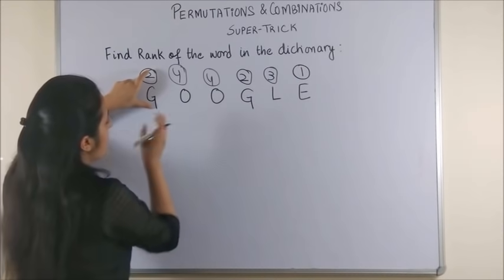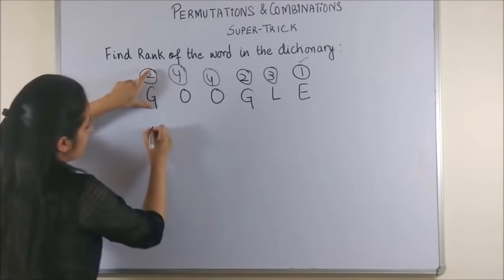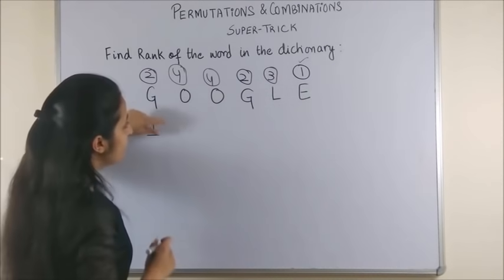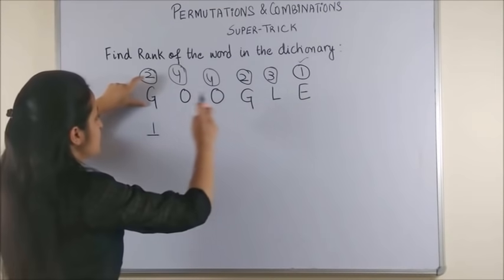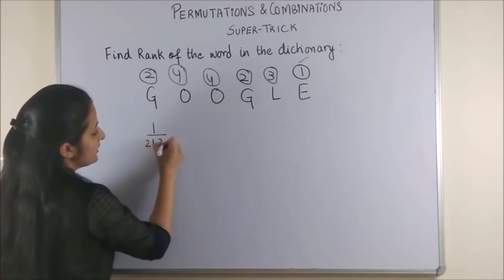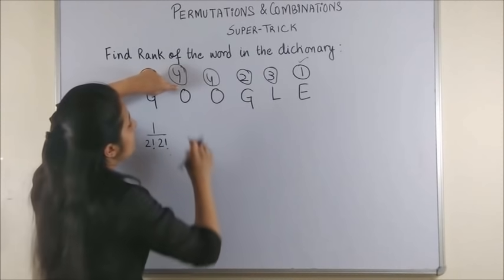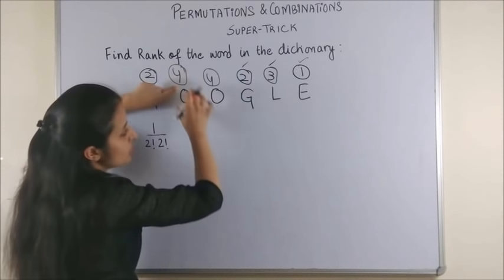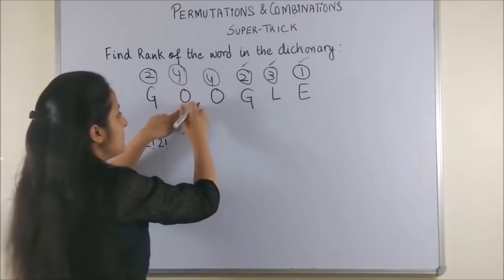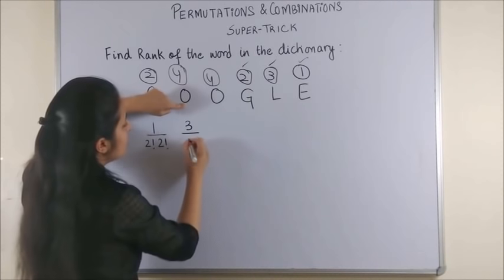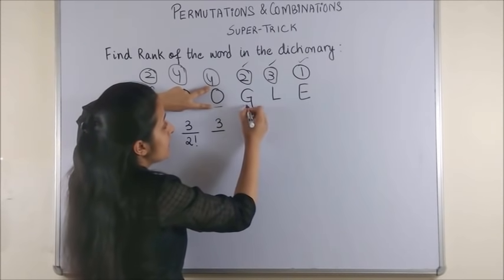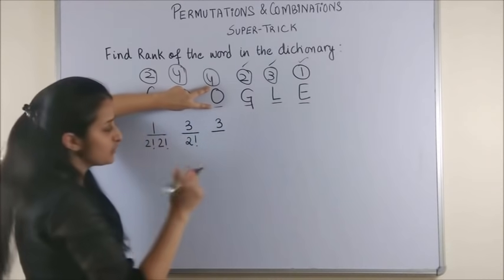Having done this, now start with your G and look towards your right. There is only one alphabet which has a rank lower than 2. Next, divide by including G any number of repetitions that you see. Including G you see G occurring twice and O occurring twice. So, upon 2 factorial into 2 factorial. Next, talking of O. On the right there are 3 alphabets which have a rank lower than 4. So, 3. And then upon including this O. Please see G is out because we will be only including O or the alphabets on the right. So, only O is repeating 2 times.